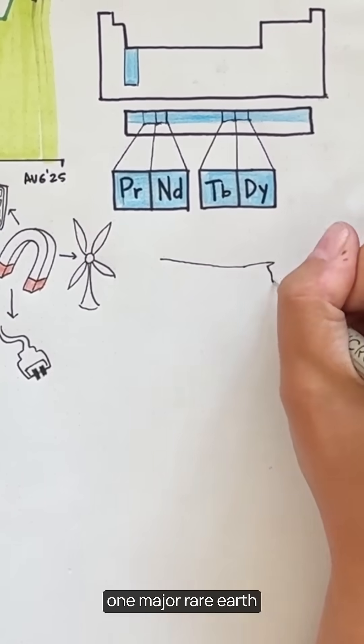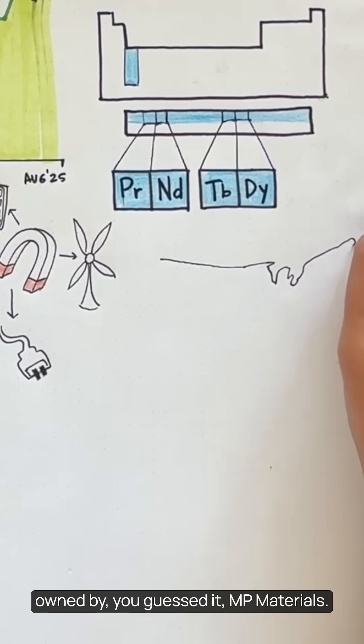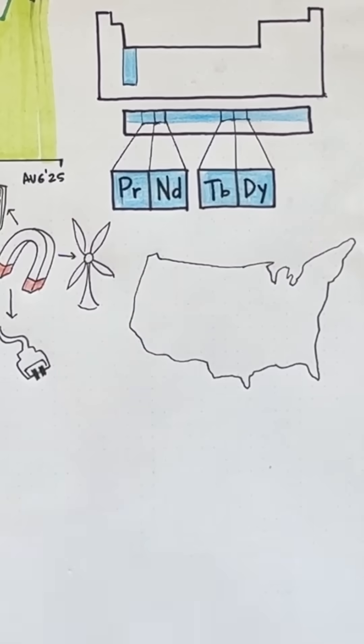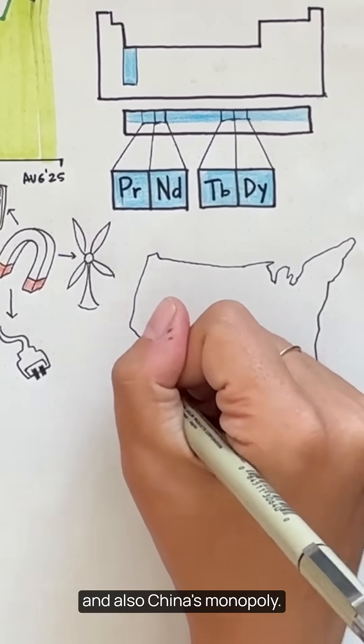The U.S. only has one major rare earth mine in Mountain Pass, California, owned by, you guessed it, MP Materials. It's trying to bring the full supply chain home. It's a race against time and also China's monopoly.